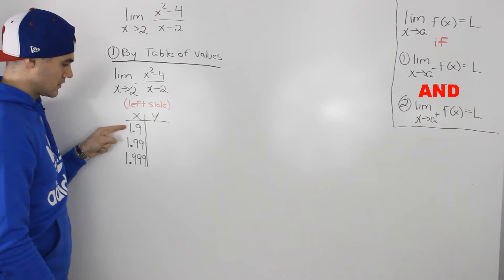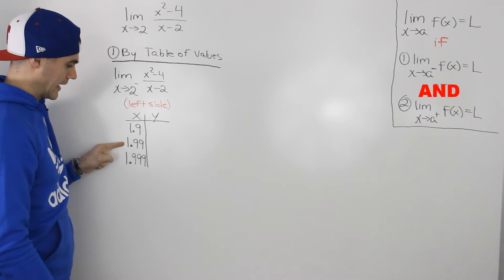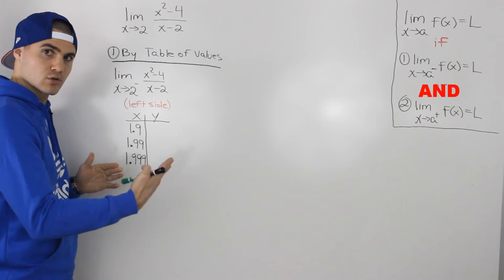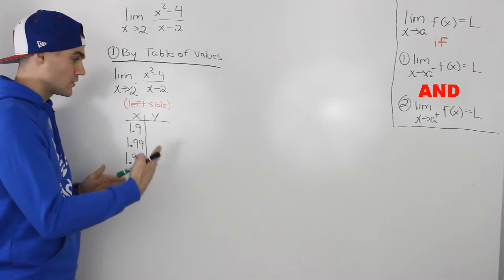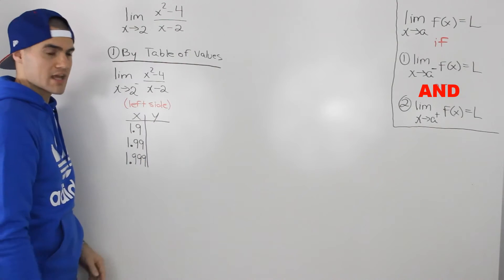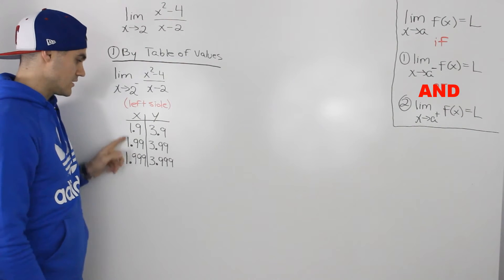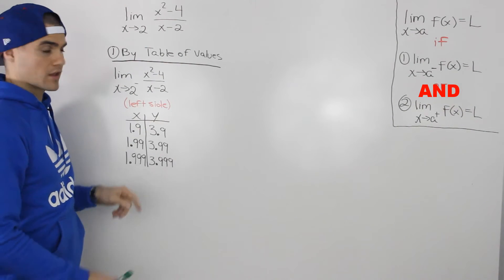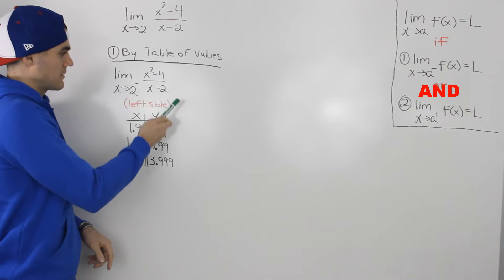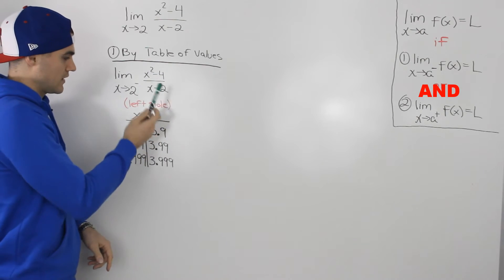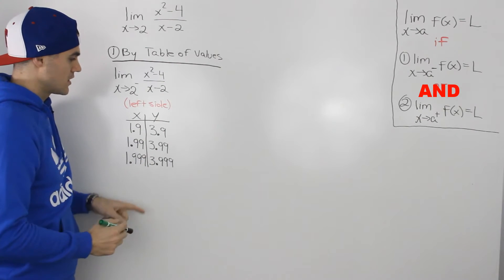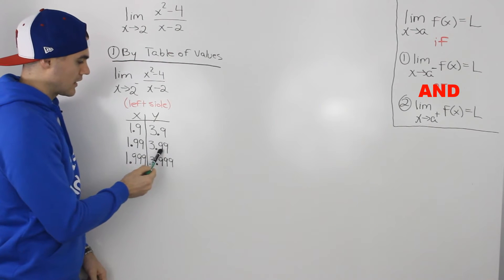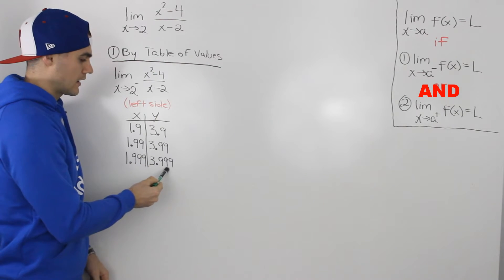So numbers like 1.9, 1.99, 1.999 — we're just getting closer and closer to 2 from that negative side. And if we take those x values and plug them into the function x squared minus 4 over x minus 2, we would get corresponding y values of 3.9, 3.99, 3.999.